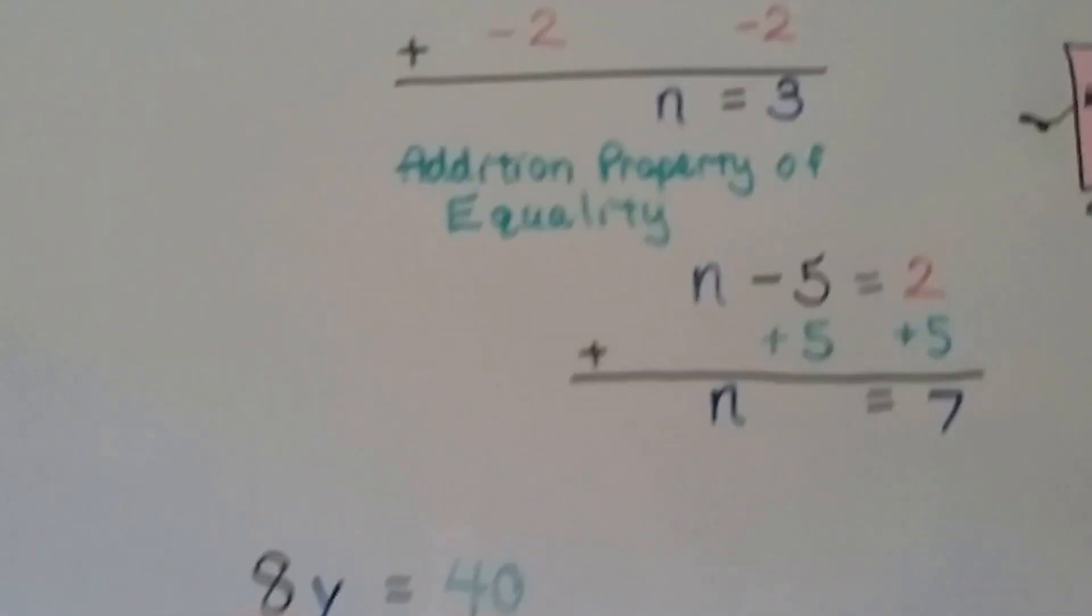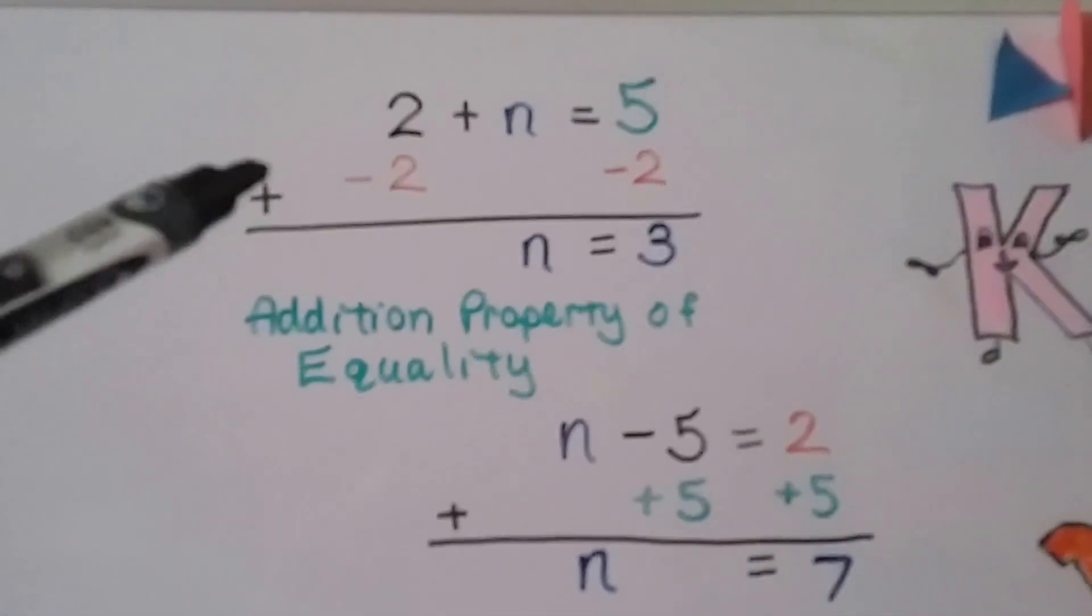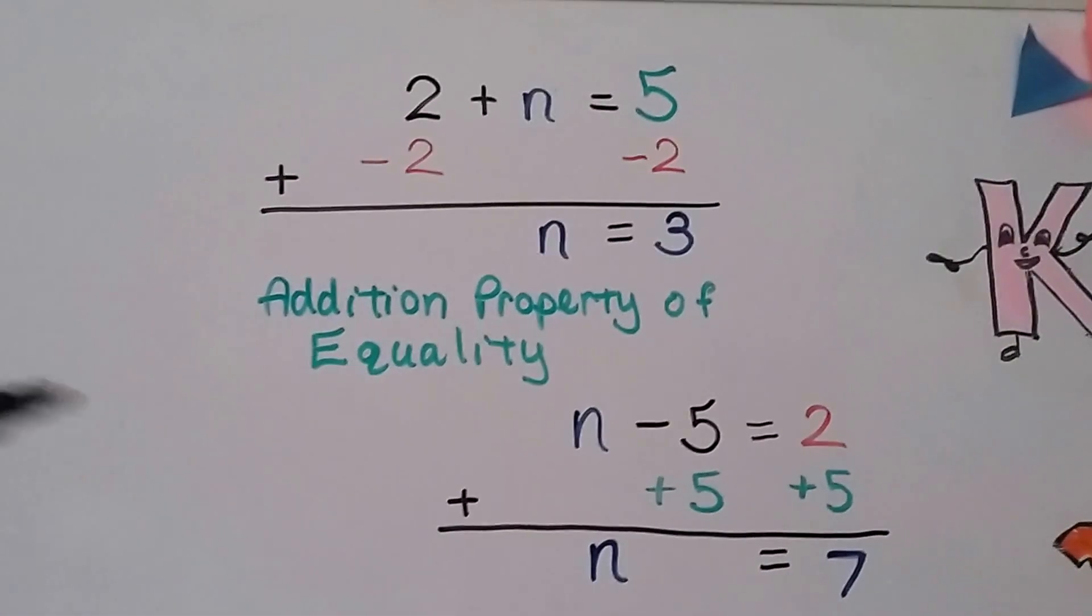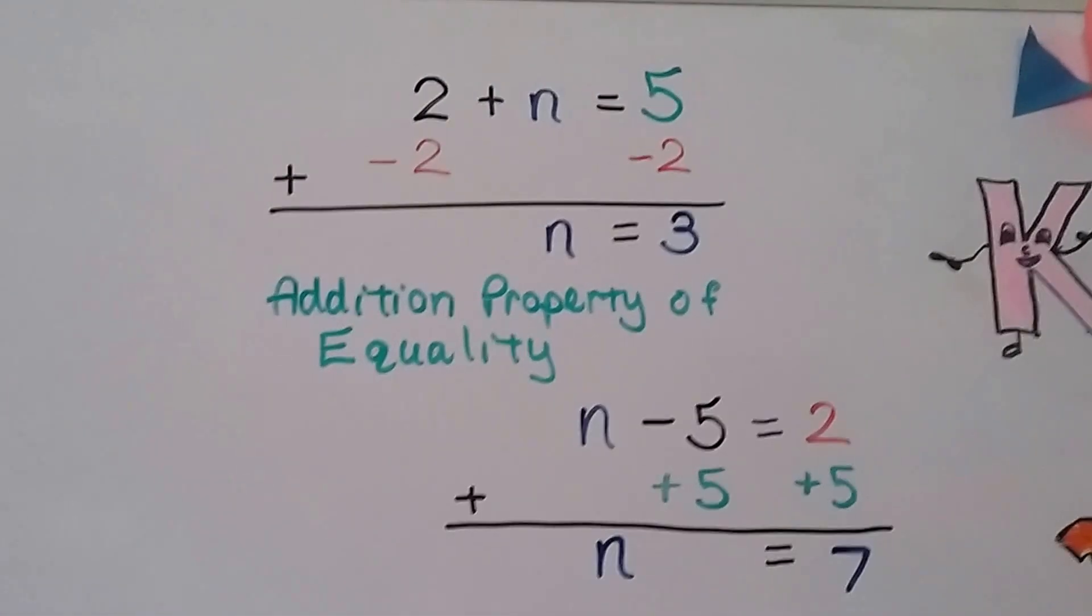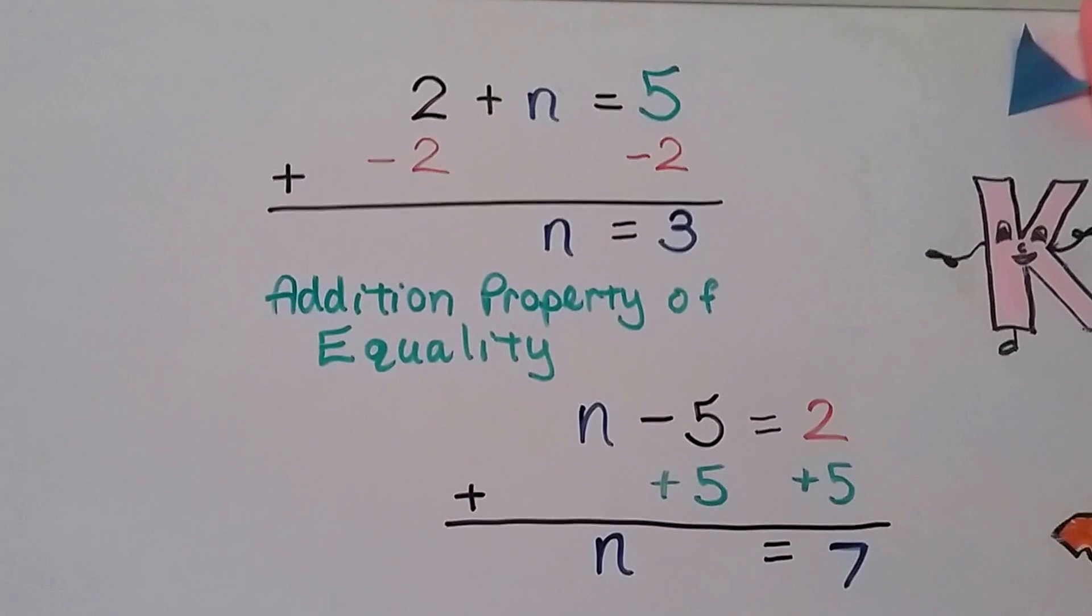Alright? And it's very similar to the addition property of equality. Notice that both of these have an addition sign. The addition property of equality uses zero pairs and additive inverses.